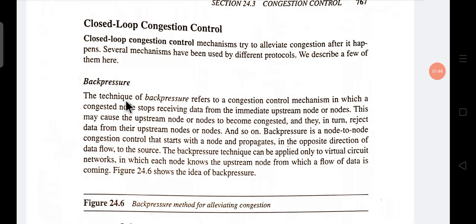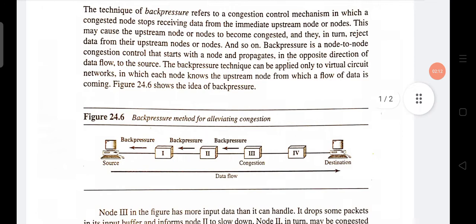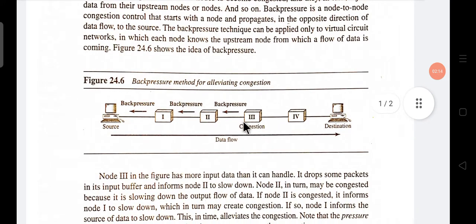There are several policies in open loop congestion control, and similarly closed loop congestion control has several mechanisms, policies, or protocols. The first one is back pressure. In back pressure, let's say this is the source node.